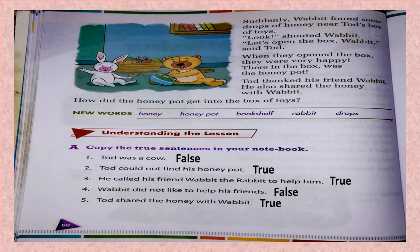Number three: He called his friend Wobbit the rabbit to help him. True — he did call his friend Wobbit the rabbit to help him, so number three is true. Number four: Wobbit did not like to help his friends. This is also not correct, this is false. Wobbit loved to help his friends, so sentence four is false.